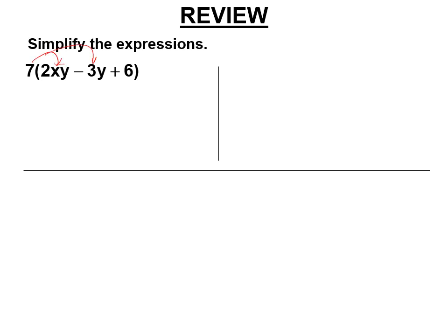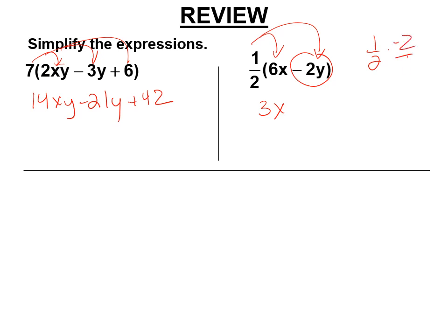Distributive property. So this is 14xy minus 21y. 7 times 6 is 42. And that is in alphabetical order. You're done. 1 half times 6 is 3. 1 half times 6x is 3x. 1 half times negative 2y is negative 1y. So this is negative y. Half of 2 is 1. Half of negative 2 is negative 1. But we don't write the negative 1 in our answer. We're distributing 0.3. 0.3 times 4 is 1.2. 0.3 times x or negative x is minus 0.3x. It's in the wrong order.